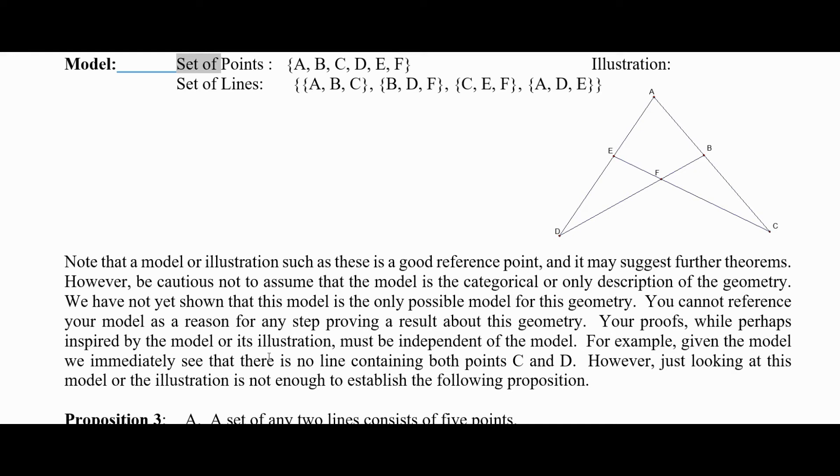So, for example, when we look at the model, we see that there's some points that aren't on the line together. This would be not true in Euclidean geometry, right? Euclidean geometry has a postulate that says, given any two points, there's exactly one line containing them. Well, that's not true in this geometry. For example, points C and D do not have any line containing them, both. That would be a non-collinear set, just C and D.